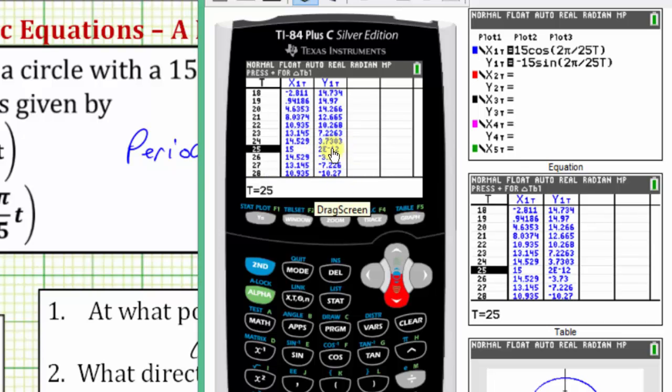The calculator is having a little bit of a problem evaluating y of t when t equals twenty-five, notice here it's showing scientific notation, two times ten raised to the power of negative twelve, but here y of t is really equal to zero.